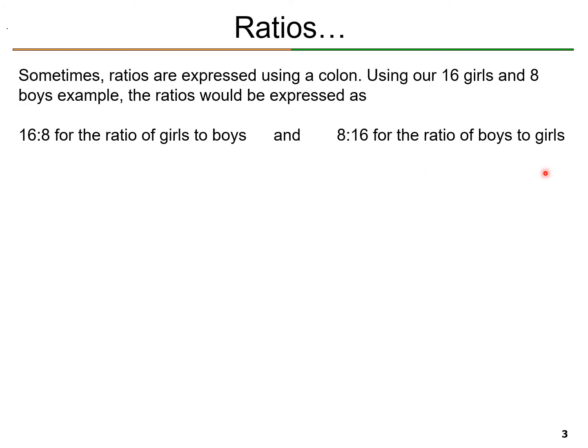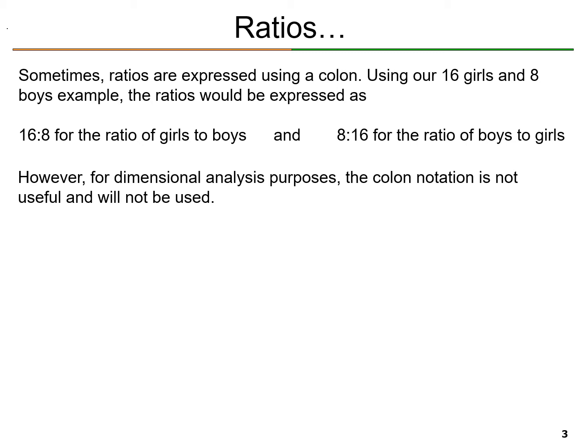Sometimes ratios are expressed using a colon. Using our 16 girls and 8 boys example, the ratios would be expressed as 16 colon 8 for the ratio of girls to boys, and 8 colon 16 for the ratio of boys to girls. You may have already seen ratios expressed using the colon notation. However, for Dimensional Analysis purposes, the colon notation is not useful and we are not going to use it.